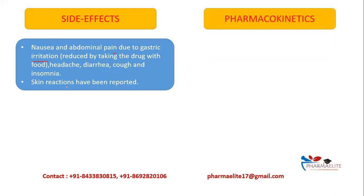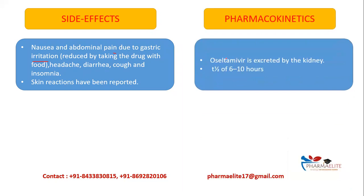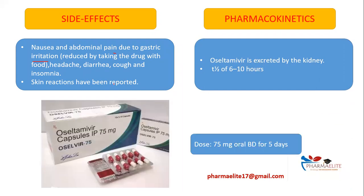Pharmacokinetics of the drug: Oseltamivir is excreted by the kidney and the half-life is 6 to 10 hours. The marketed formulation is Oseltamivir 75. The dose is 75 mg oral twice a day for 5 days.